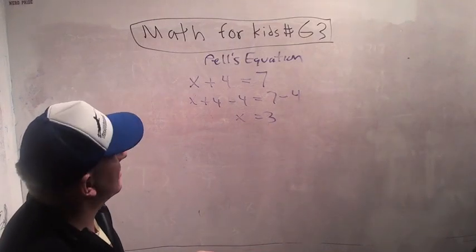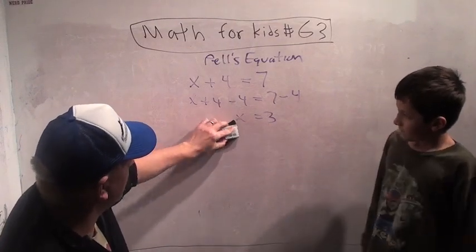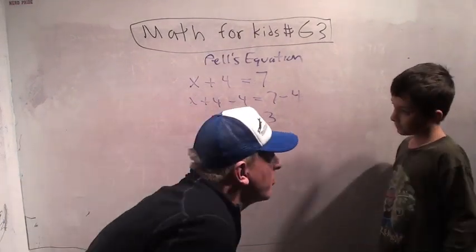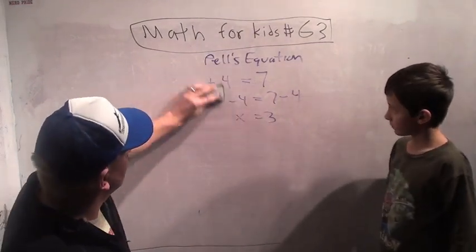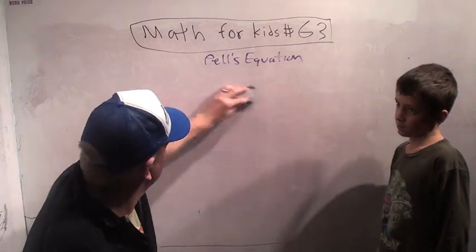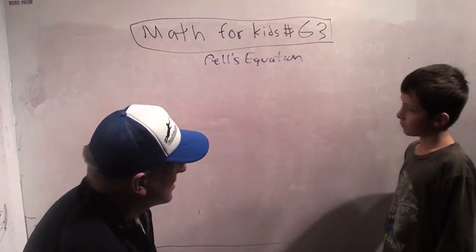Pell's equation is something a little bit more complicated, but since we're starting to learn about these, I thought I'd show you something really neat in where this all ends up going, that you don't usually get to see this kind of stuff in school. Pell's equation is this: x squared minus 7 times y squared equals 1.